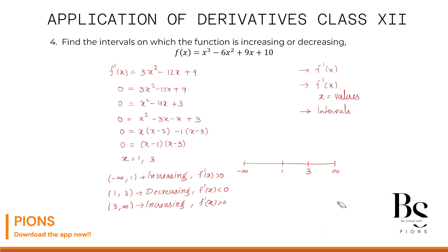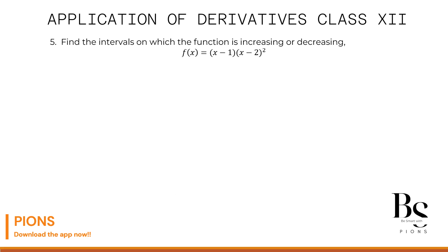Let's start question 5: find the intervals on which the function is increasing or decreasing. Most people try to expand it, but since it involves a square and a cube that becomes complicated. Instead, use the chain rule — this makes it much easier. Step 1: find f'(x).